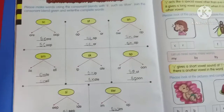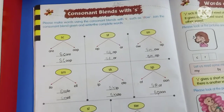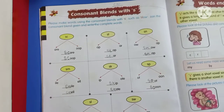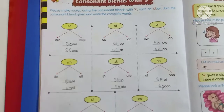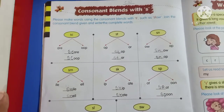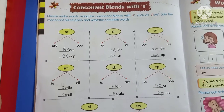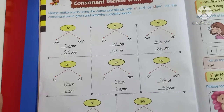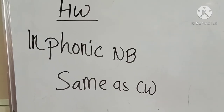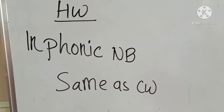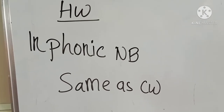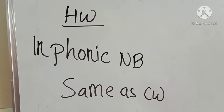So kids, today we completed our classwork. Yes, consonant blends with S was our today's topic — consonant blends with S. We completed the task of joining consonant blends with S and writing the complete words. We completed it. Yes, very good. And kids, our today's homework: in your phonics notebook, do the same as classwork — what we did on page number 38, do that in your phonics notebook. Yes, consonant blends with S. Okay?